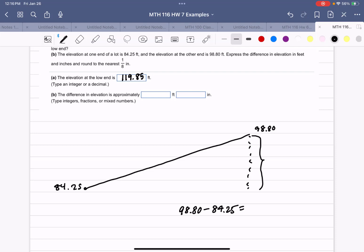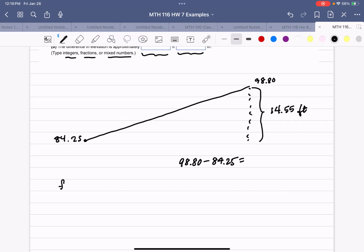So the difference in this elevation is 98.80 minus 84.25. So this total drop in elevation is 14.55 feet. Now they've asked us to do it in feet and inches, and they don't give us the option to use a decimal. To change feet to inches, we multiply by 12.